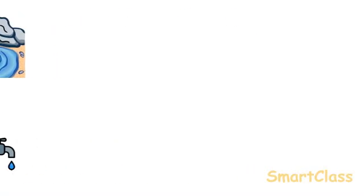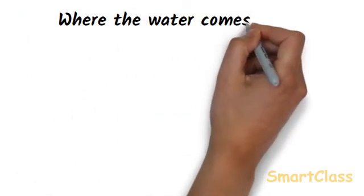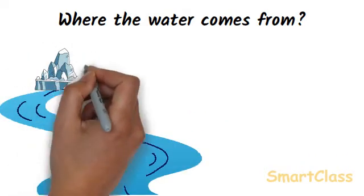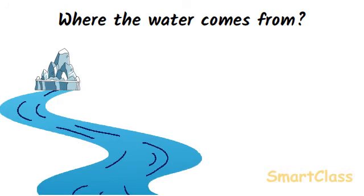Let us now understand where the water comes into rivers, lakes, ponds and wells. The rivers get their water from the melting of snow lying on the peaks of snow mountains called glaciers and also from rains.